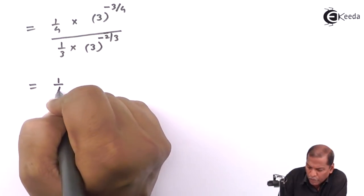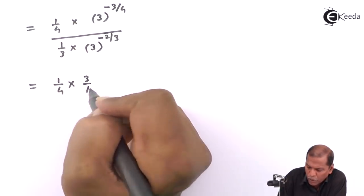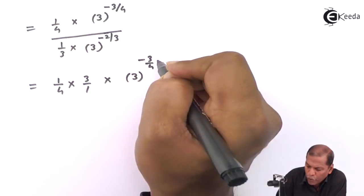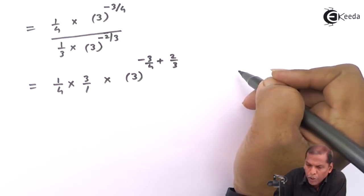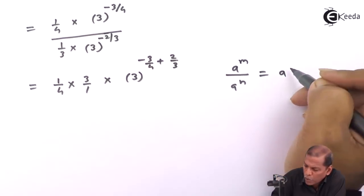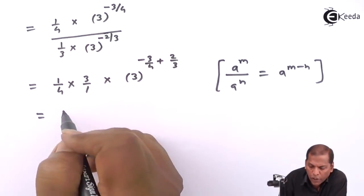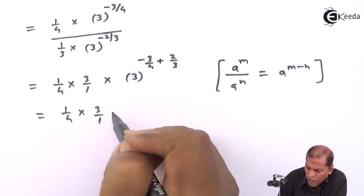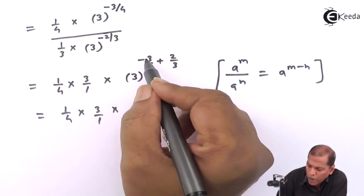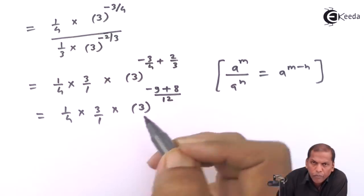On further simplifying, we write 1/4 as it is, and 1/3 is taken to the numerator giving 3/1. Then we have 3 raised (minus 3/4 plus 2/3). Using the indices law that a raised m upon a raised n equals a raised (m minus n), we cross multiply: minus 3 times 3 gives minus 9, plus 4 times 2 gives 8, upon 4 times 3 gives 12.